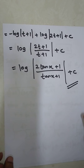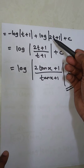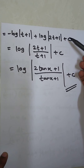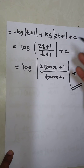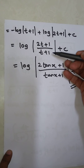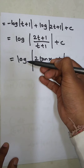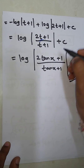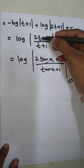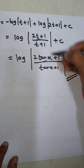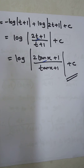At the end, we have log(t + 1) + (1/2) log(2t + 1) + C. The 2's cancel out, giving log(2t + 1)/(t + 1) + C. Finally, replacing t with tan x, the final answer is log(2 tan x + 1)/(tan x + 1) + C. Thank you.